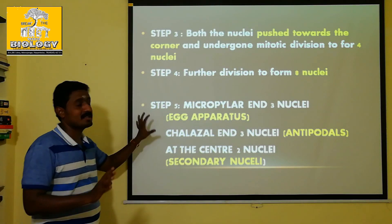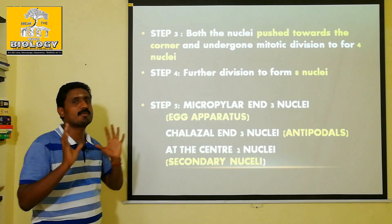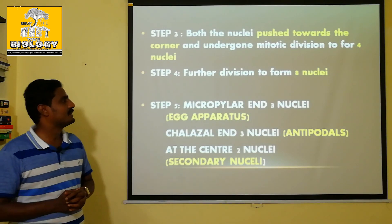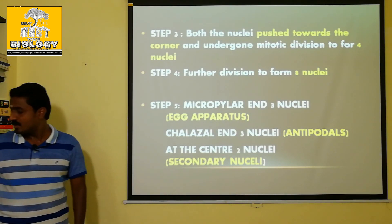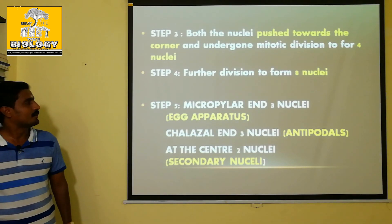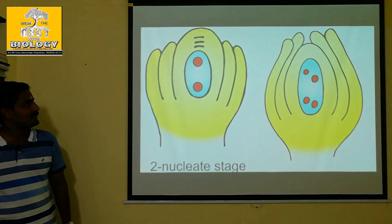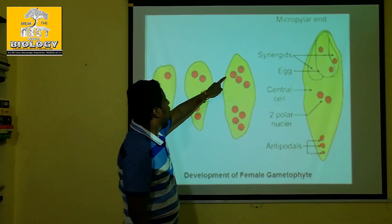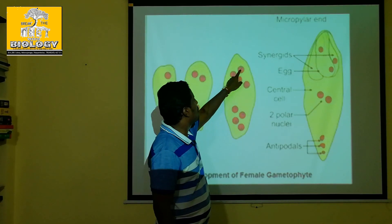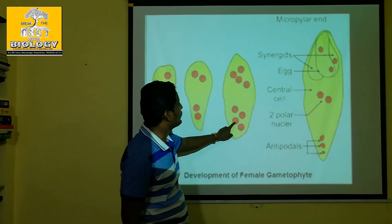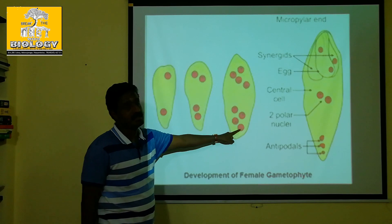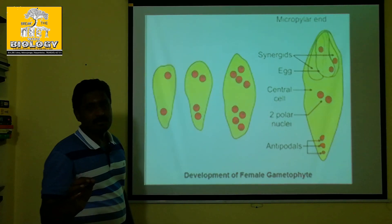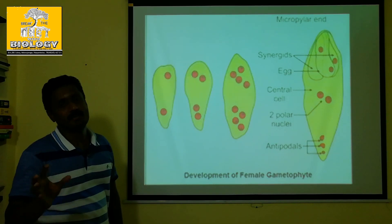In the fifth step, this step is very important. Now, let's go to the 8-celled stage. In this stage, the second cell is haploid.